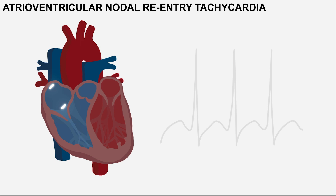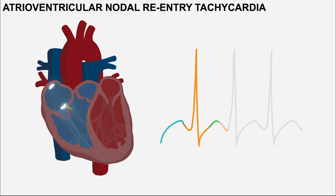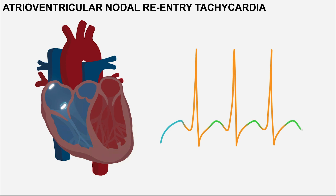We can see what's going on in AVNRT. The impulse begins at the SA node, goes across the atria, and ends up at the AV node. At the AV node, it forms a re-entry circuit, which then discharges through to the ventricles, giving rise to a QRS complex. This usually happens on a rapid and regular basis, giving rise to a regular, narrow complex tachycardia with no visible P waves.